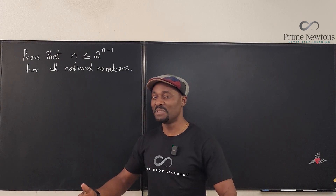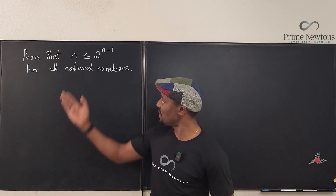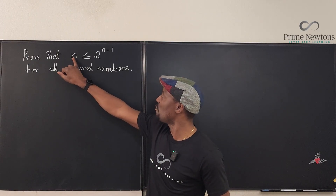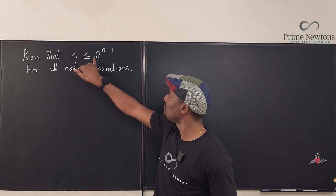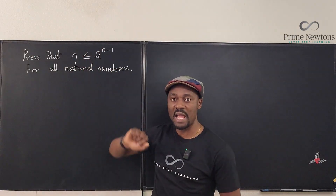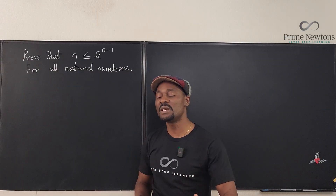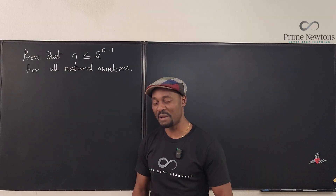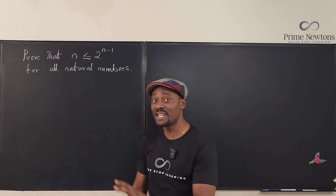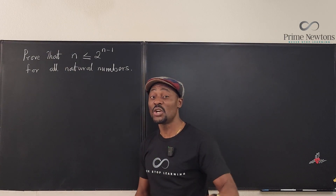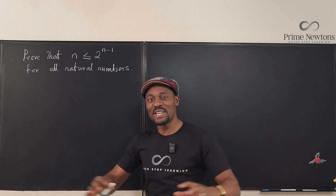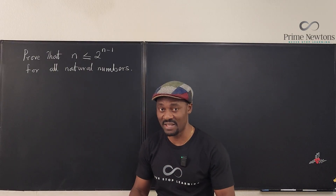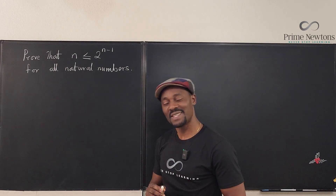So when we say something, it's called a conjecture. We want to prove that if you have natural numbers, any natural number you pick will be less than or equal to 2 raised to power n minus 1, where n is the natural number. One of the ways of doing a mathematical proof is by mathematical induction. The reason I picked this is because it's an inequality and it's harder — it's not an equation that you can move things around easily. You have to think a bit carefully before you start moving things around.